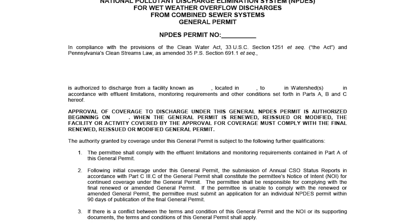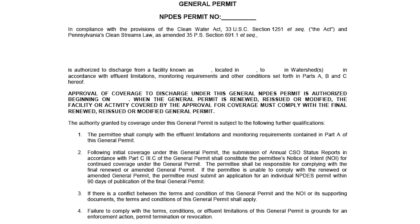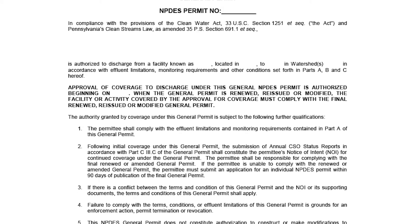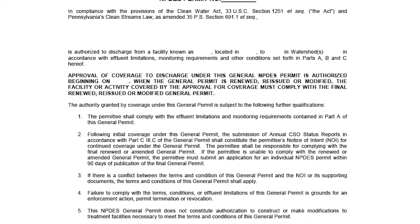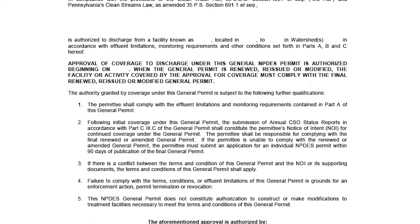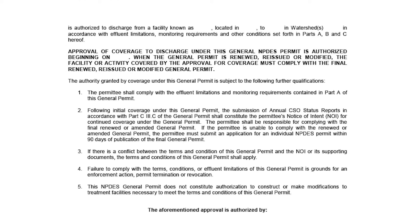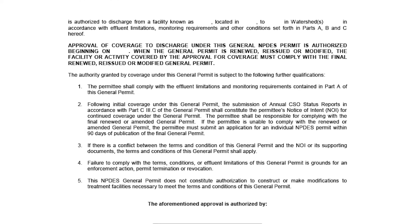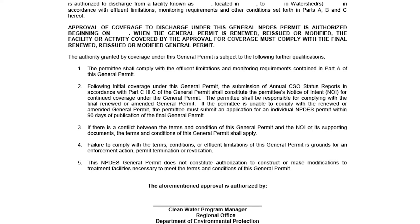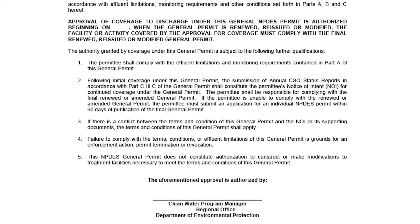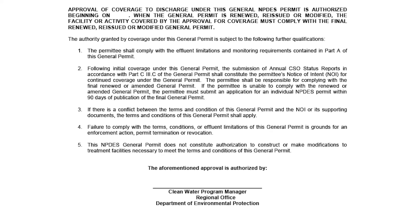These regulations prohibit untreated discharges from combined sewer systems during dry weather and require CSO system owners to implement minimum control measures in order to lessen the volume of water bypassing the wastewater treatment plant and to reduce the total pollutant loads associated with combined sewer overflows.